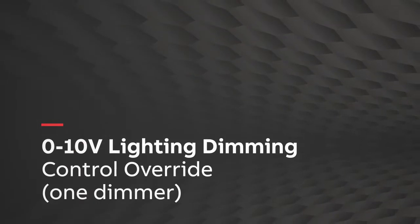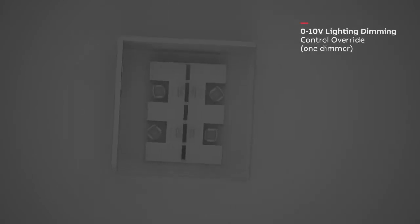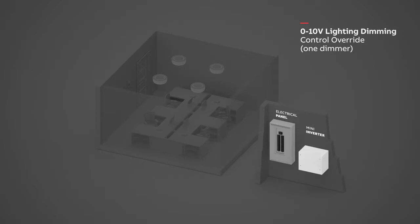Here's how to wire lights controlled by only one 0-10 volt dimmer. For applications where there is only one 0-10 volt dimmer, a Mini Inverter Lighting Control Override Module needs to be used in order to override the 0-10 volt dimmer.